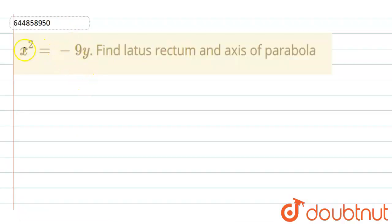Hello students, in this question we have given that x square equals minus 9y, and we need to find the latus rectum and the axis of parabola.